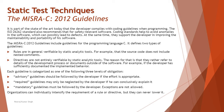Each guideline is categorized as one of the following three levels of obligations as per the MISRA-C 2012 guidelines: advisory, required, and mandatory. Advisory stands for guidelines which a developer should follow if the effort is appropriate. Required stands for guidelines that may only be neglected by the developer if they can conclusively explain it. Mandatory guidelines must be followed by the developer — exceptions are not allowed. Organizations can individually intensify the requirement of a rule or directive, but they can never lower it.